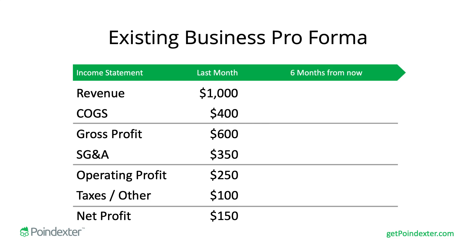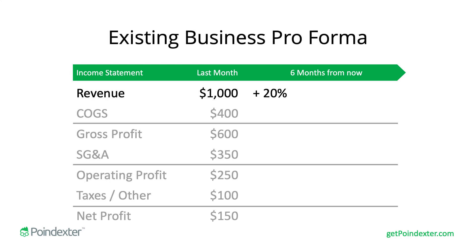With the benefit of already having data in hand, all we have to do is decide when in the future we're looking to establish a goal for this particular pro forma. For now, we'll choose six months from today. The way this works for existing businesses is pretty straightforward: you focus on revenue and establish some benchmark or goal, such as an increase of 20%. So 1,000 plus 20% equals 1,200 — that's generally how we reach our revenue forecast.